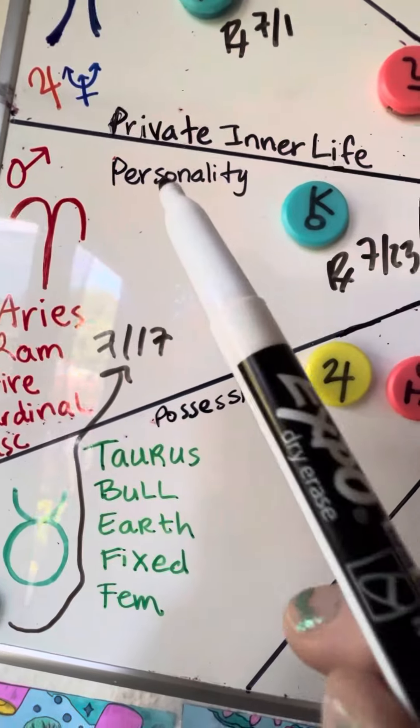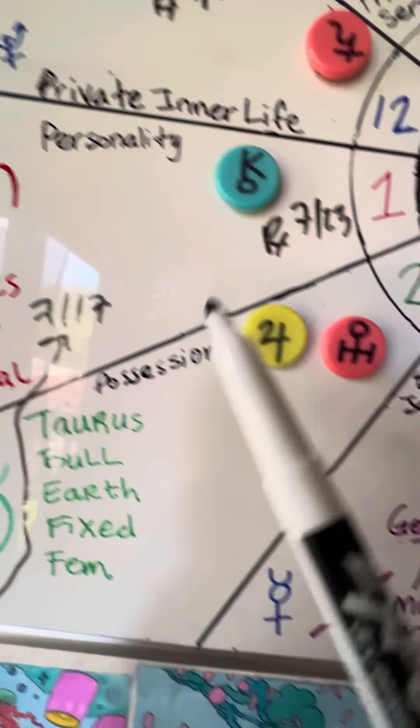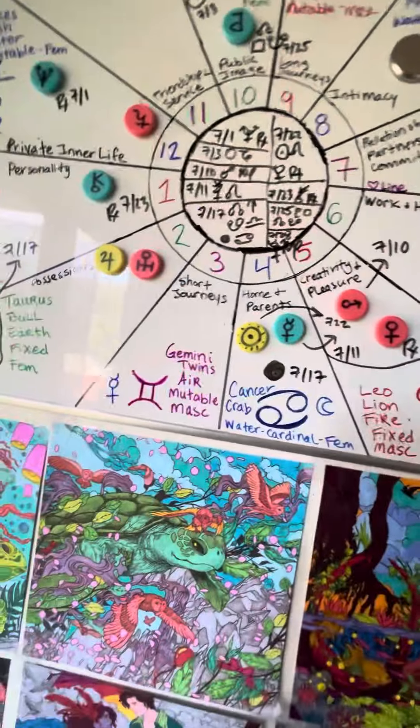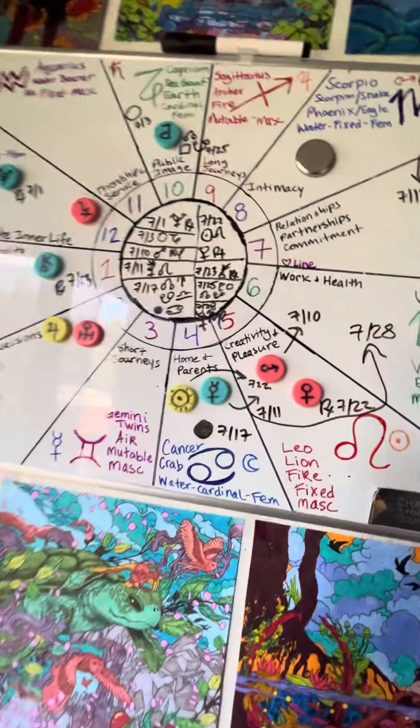Like Mars rules Aries. And then it tells you what the house represents. So that's the basic board.